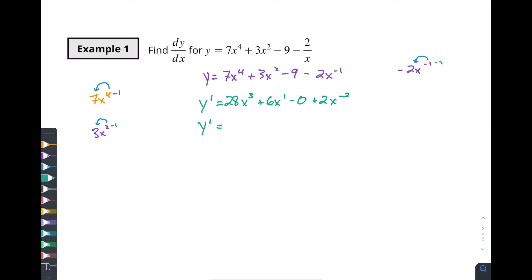So y prime is going to be 28x cubed. That's a 3. 28x cubed plus 6x plus 2x to the minus 2. Now sometimes you might, you know, it's really kind of here nor there. It's kind of personal preference. But sometimes you might want to do this and just make that back into a fraction. I don't know if that really makes it any better or worse of an equation. But I would say really these two are the two ways that you want to write this as your final answer for this problem.